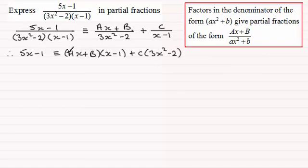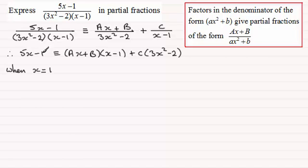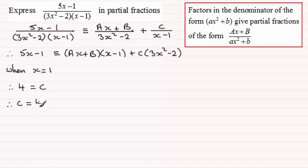To find the constants A, B and C, the best thing to do is make the linear factor bracket equal to 0, which we do by choosing x equals 1. When x is 1, the left side gives 5 minus 1 which is 4. The first term on the right goes to 0, and the second term gives 3 minus 2 equals 1, times C. So C equals 4.